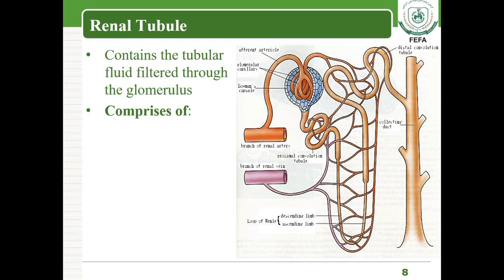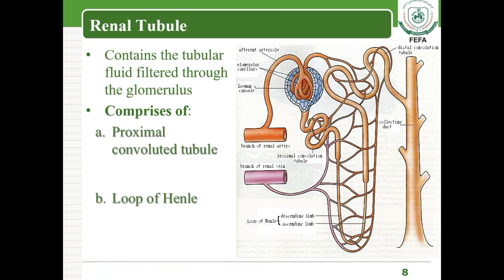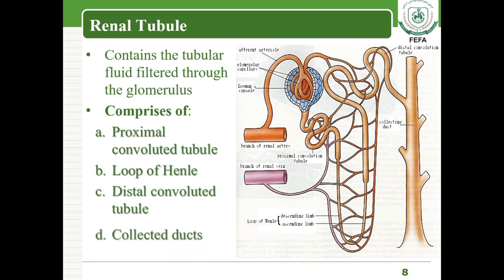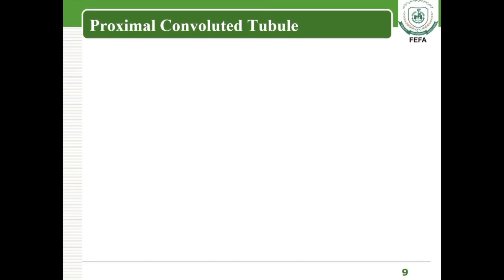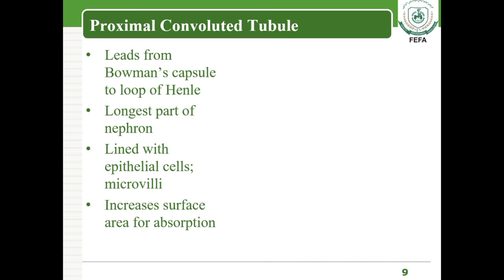Renal tubules are the second part of the nephron, composed of various tubular segments starting from the Bowman's capsule. These include the proximal convoluted tubule, the loop of Henle, and the distal convoluted tubule. The distal convoluted tubule then connects to the collecting duct. The proximal convoluted tubule originates from the Bowman's capsule and leads to the loop of Henle.